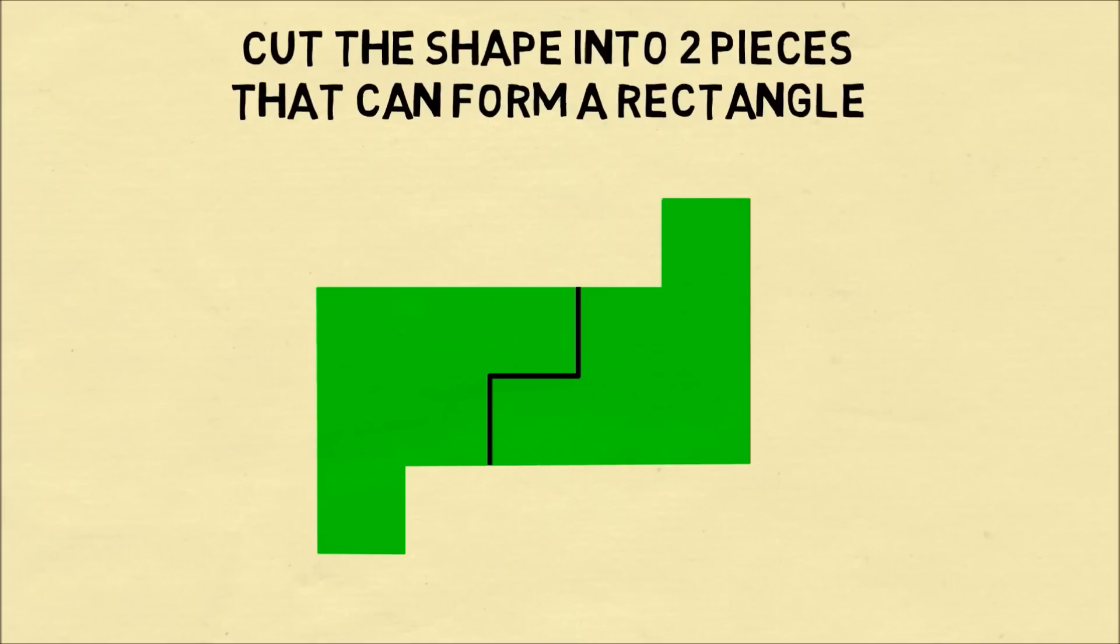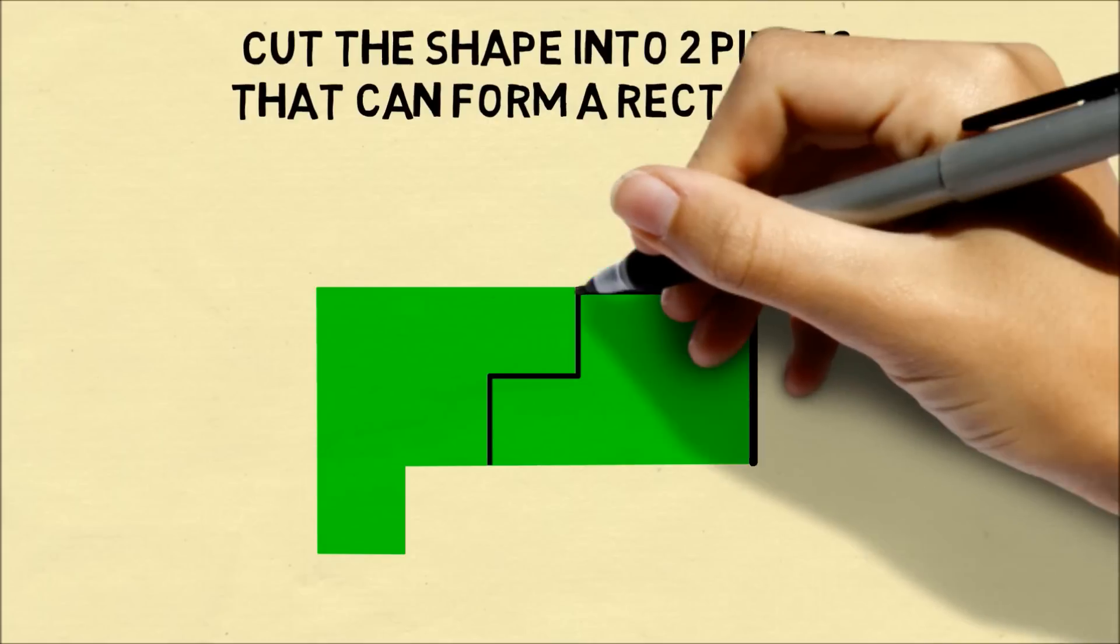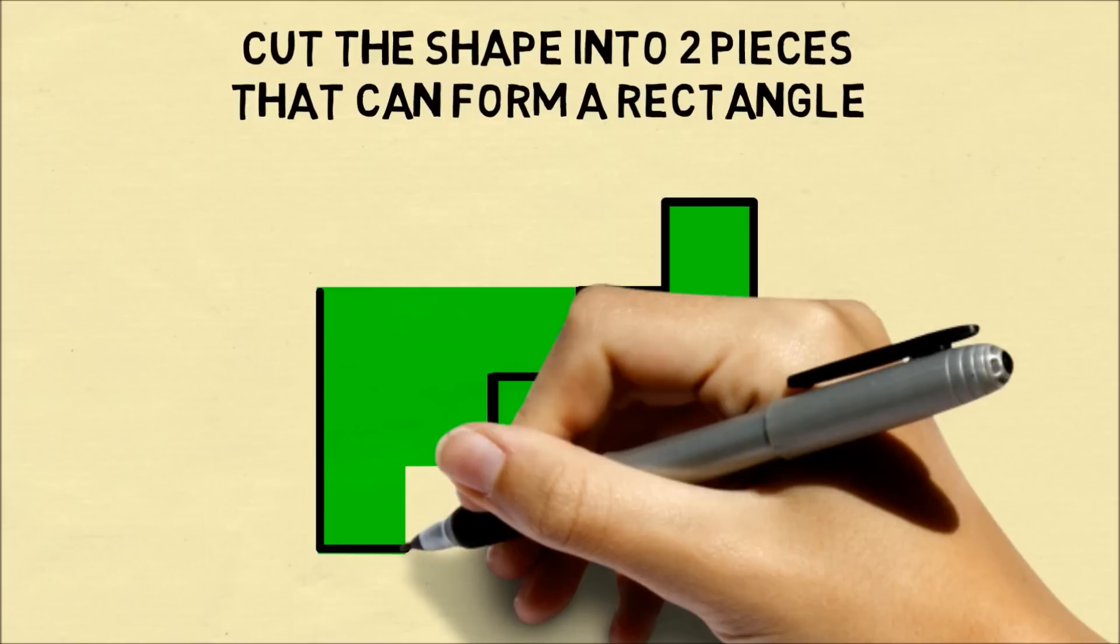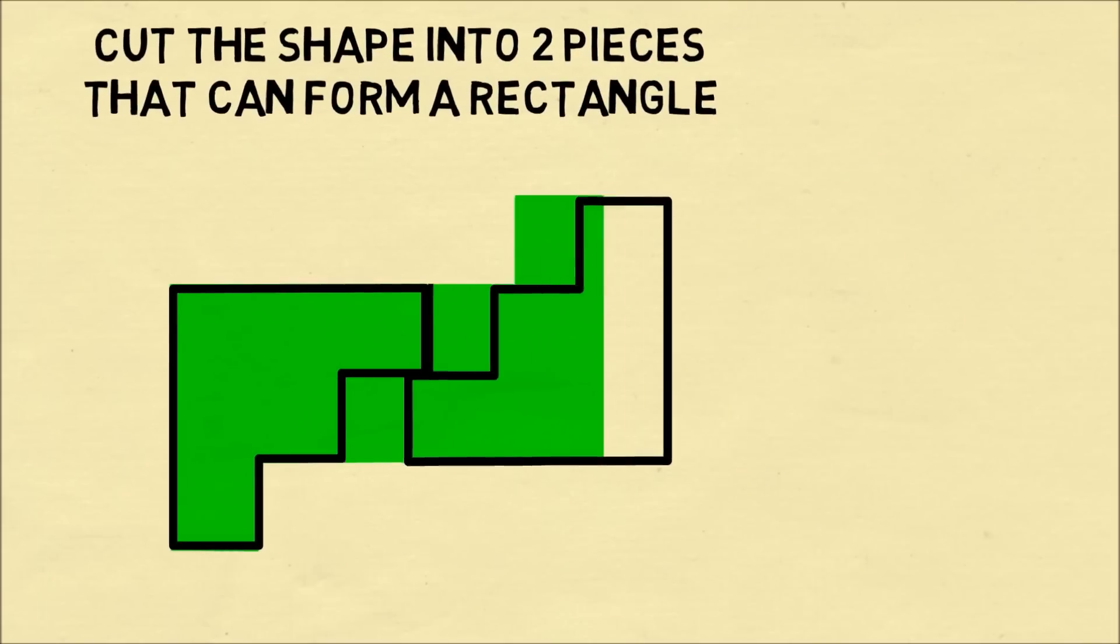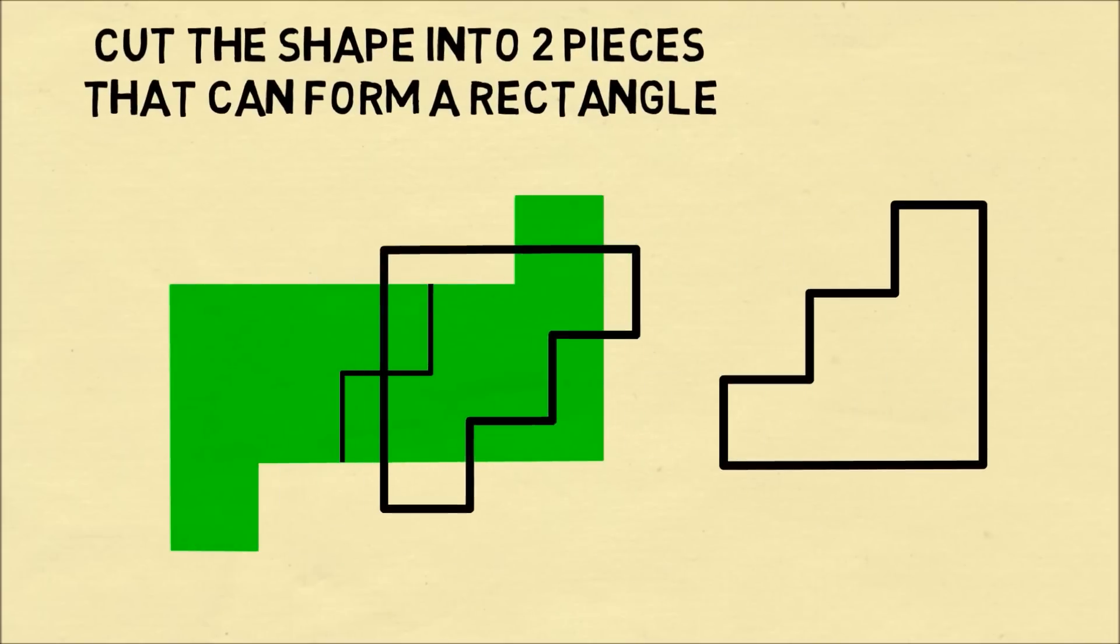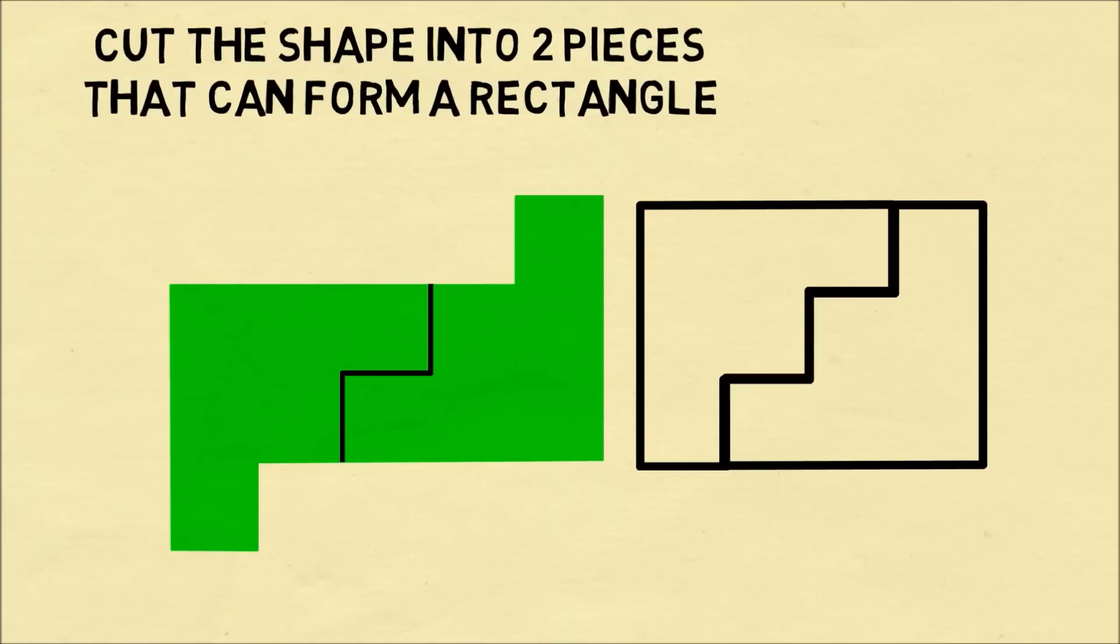All right, here's the solution. You need to cut the shape with the zigzag. Once you do that, the original shape will be divided into two staircase looking shapes and these can be rearranged into a rectangle.